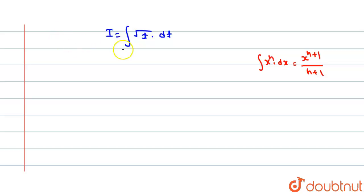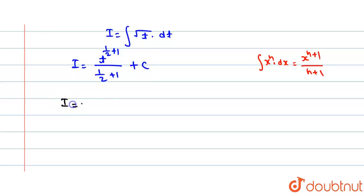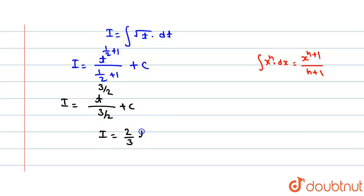Put n = 1/2 here. So we get I = t^(1/2 + 1) / (1/2 + 1) + C, which is t^(3/2) / (3/2) + C. So I = (2/3) t^(3/2) + C.